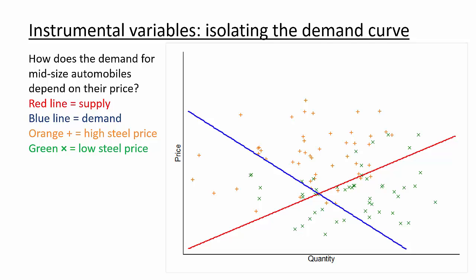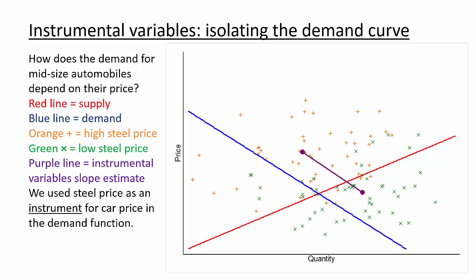In this graph, take the average price and quantity when steel prices are high, and then take the average price and quantity when steel prices are low. You will get these two points. Note that the line connecting the two points very closely matches the slope of the demand curve. This is no coincidence. We have applied the instrumental variables estimator, and using econometric terminology, we have used steel price as an instrument for car price and the demand function.